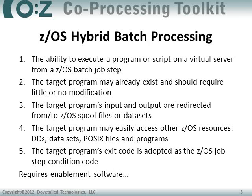Fourth, the target program, when it starts to execute and during its execution, should be able to easily access other ZOS resources — namely job step DDs, data sets, POSIX files, and potentially the output from other ZOS Unix programs. Finally, when the target program completes, its exit code should be adopted as the ZOS job step condition code. IBM doesn't provide native software for implementing ZOS Hybrid Batch Processing, but the Cozy Co-Processing Toolkit does.